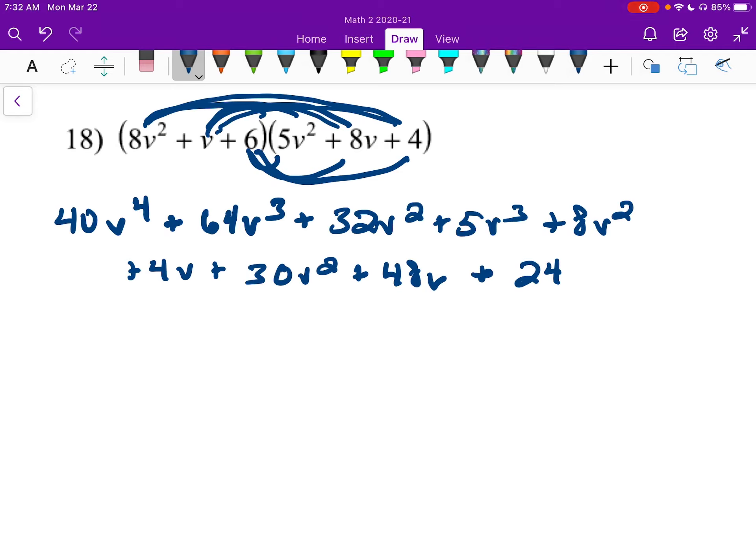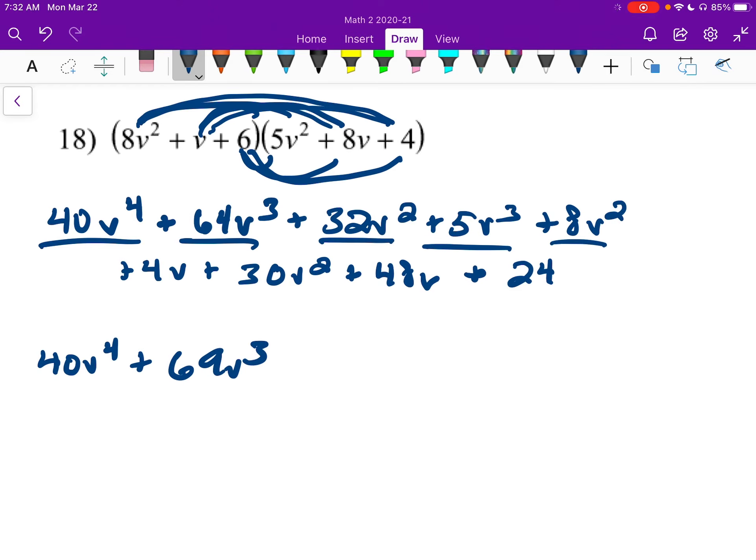Combining like terms now, we have a highest exponent of 4, so we'll have 40v to the 4th, plus 64v cubed. Nope, not quite. 64 plus 5 gives me 69v cubed. And then for my v squared, I have a 32, an 8, a 30, gives me 70. And then 4 and 48 gives me 52. And then lastly, I have a 24.